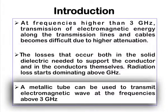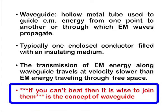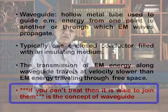The solution is that a metallic tube can be used to transmit electromagnetic waves above 3 gigahertz frequencies. Especially, the waveguide — a metallic closed conductor — as its name indicates, guides the wave. The general concept is: if you cannot beat them, it is wise to join them. The waveguide works on this principle. Instead of flowing energy by applying voltage and current, we first convert the signal into an EM wave and guide the wave using a waveguide.